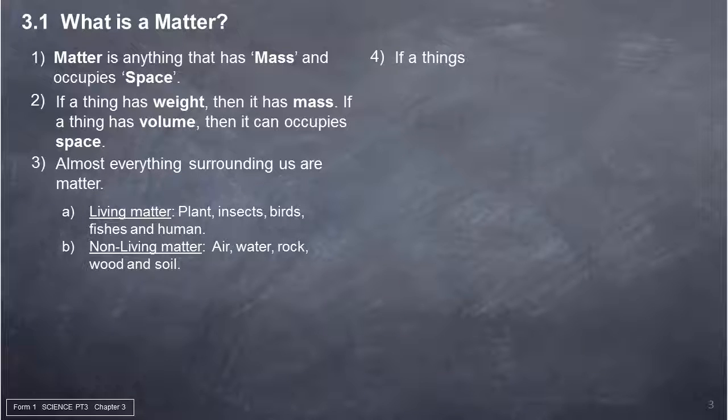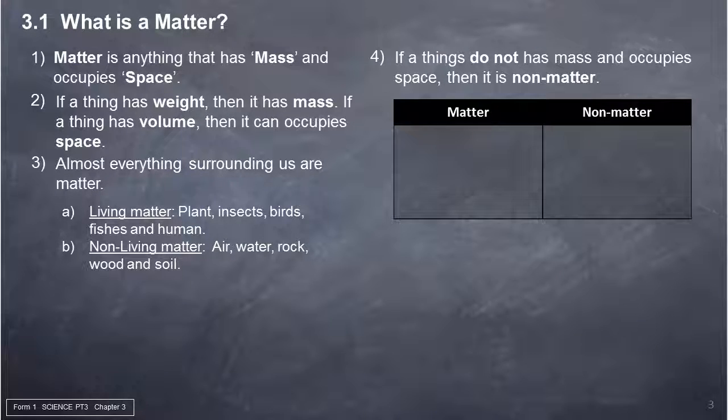4. If a thing does not have mass and does not occupy space, then it is non-matter. Examples. Matter: Plant, insects, birds, fish, human, air, water, rock, wood, soil, etc.